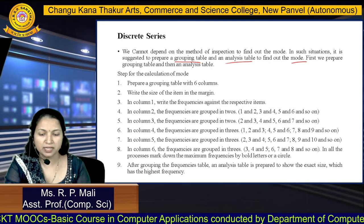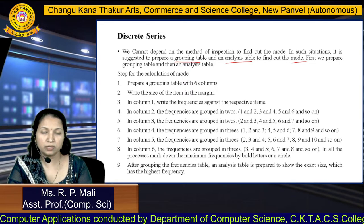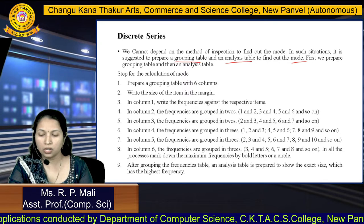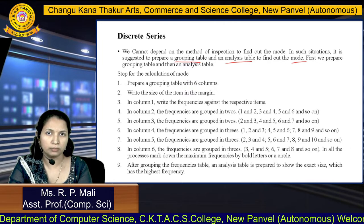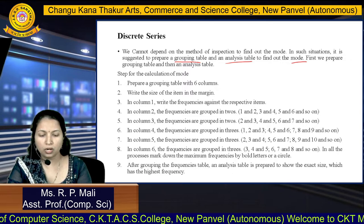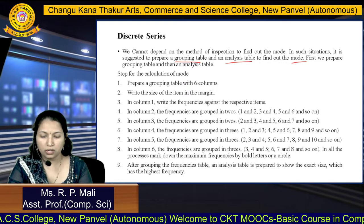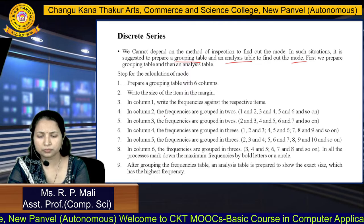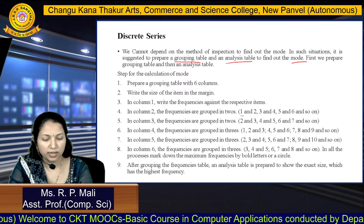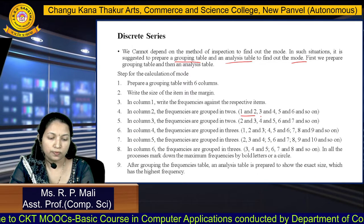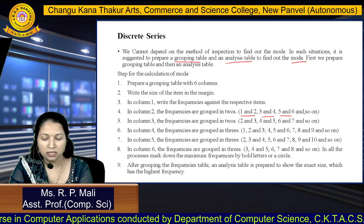The following steps are for your analysis table. First step: prepare the grouping table with 6 columns. Write the size of item in the margin as a 7th column at the start. In the first column, write all the frequencies against the respective item. In column 2, group the frequencies in 2's — add the 1st and 2nd frequency, then 3rd and 4th, then 5th and 6th, and so on. In column 3, skip the first frequency and add the next two frequencies: 2nd plus 3rd, then 4th plus 5th, and so on.